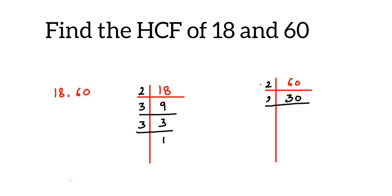60 goes in the 2 table: 2 threes are 6, write down the 0. Again, 2 ones are 2. When you divide 30 by 2 you get 15. Now 15 doesn't go in the 2 table, so take 3: 3 fives are 15, and then 5 ones are 5.